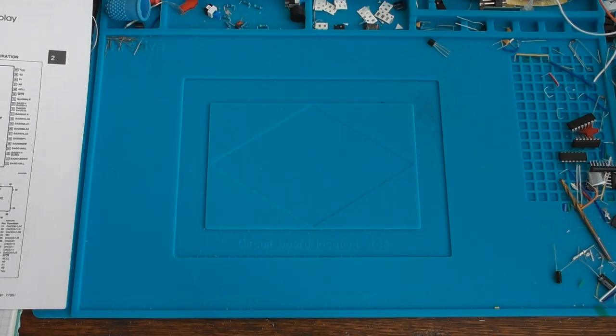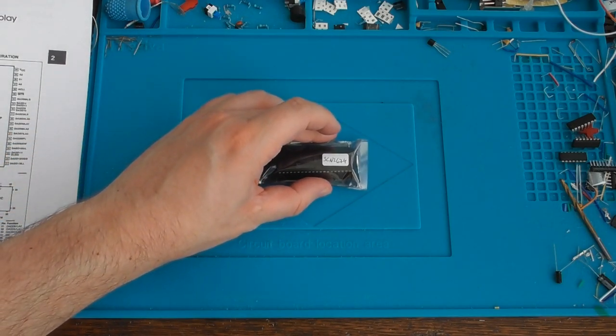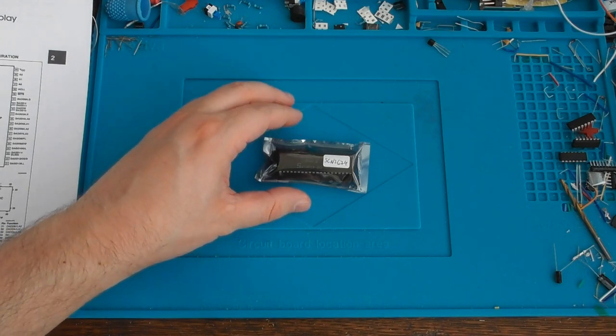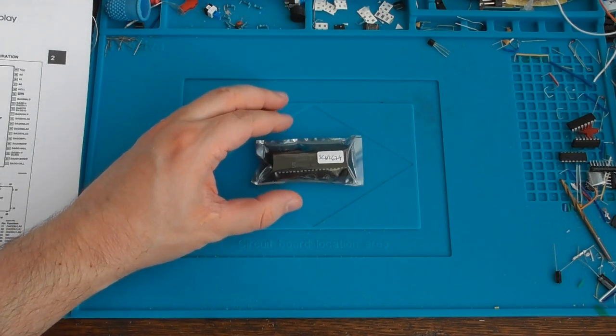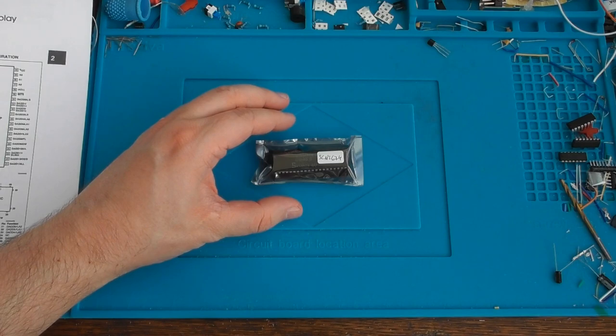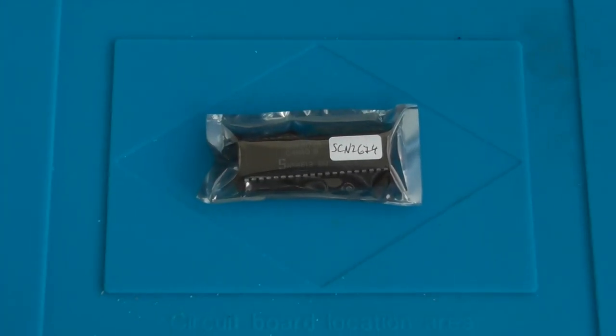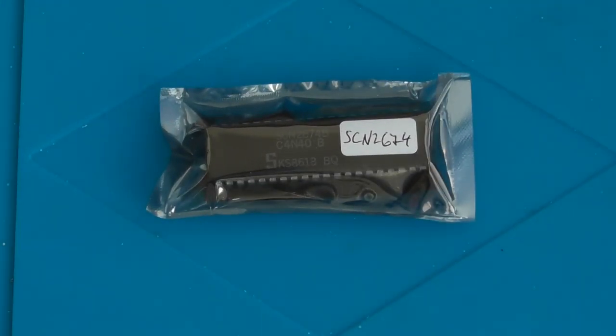Hi everybody, welcome back. Today I want to have a look at the SCN2674. It's a video display controller from the mid-80s, a bit like the 6845 that I've seen used before in the BBC Micro and in early PC graphics cards.